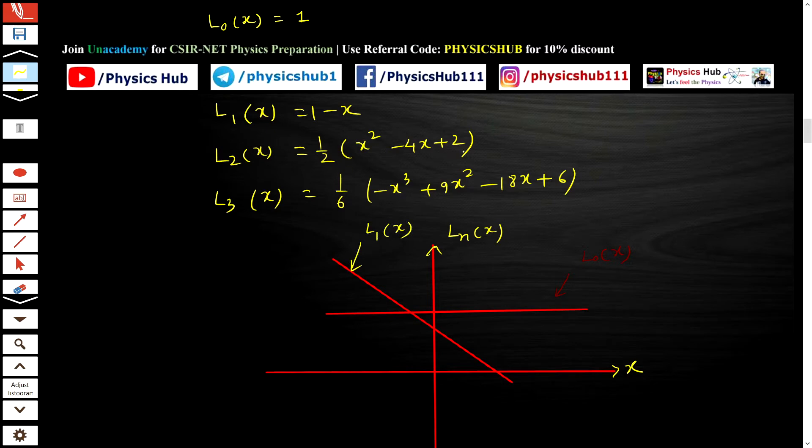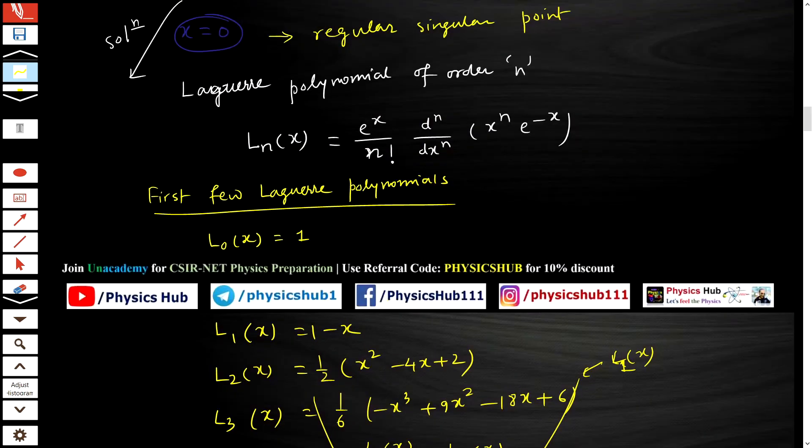L₂(x) = ½(x²-4x+2). As you can see, this is a parabolic equation. At x = 0, it has a value of 1. So it should pass from here. It will give you something like this—a parabolic curve. This is L₂(x). In this way, you can plot the Laguerre polynomials.